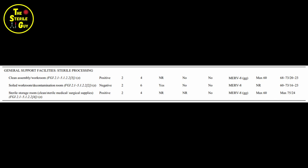The clean areas of assembly and storage require only four air exchanges per hour. Since decontam is much dirtier, it requires six air exchanges. Now that we've covered what air exchanges are, that'll make it much easier to describe and show you what negative and positive air pressure means — not only in a single room, but as a department as a whole and how it works together.